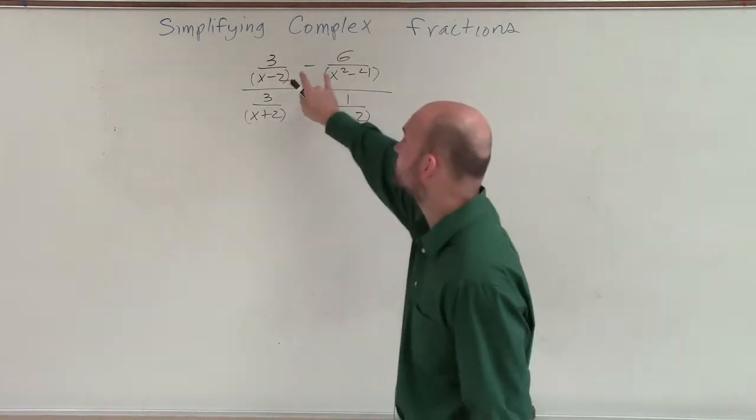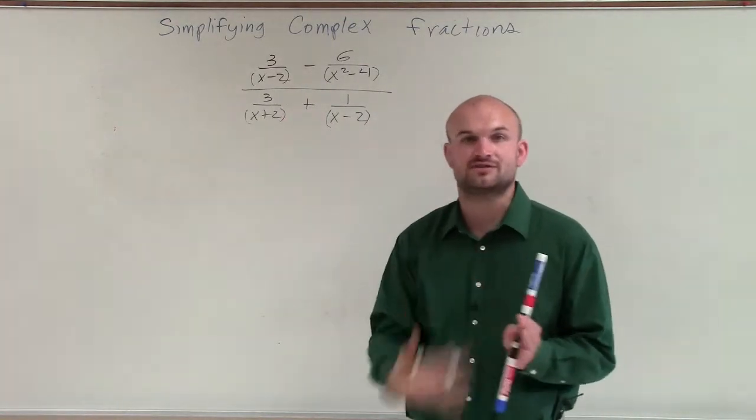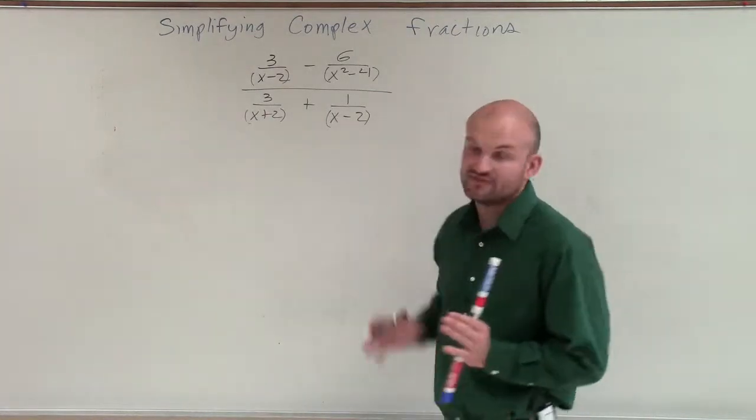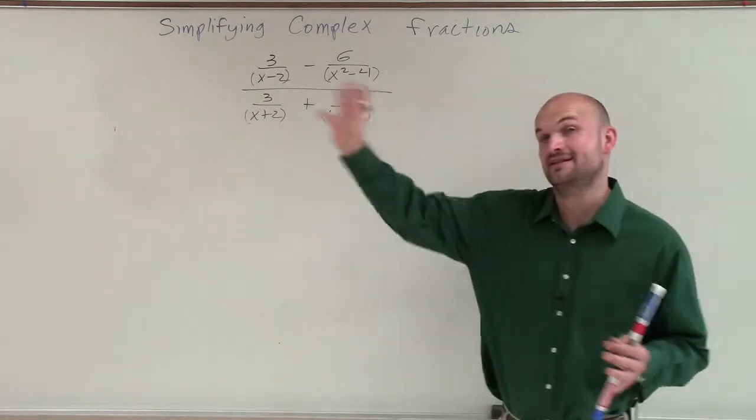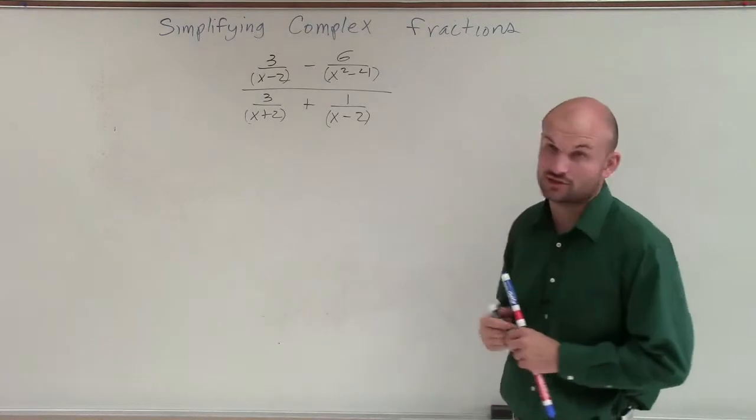We could either combine our numerator and denominator into simplified fractions, and then just multiply by the reciprocal of your denominator. Or we could multiply everything by the LCD of every single denominator.